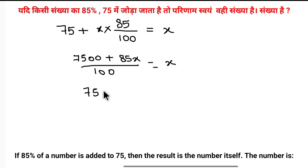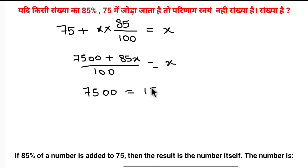75 is equal to 100x, and 85x minus 1x is equal to 15x. So 15x equals 75.